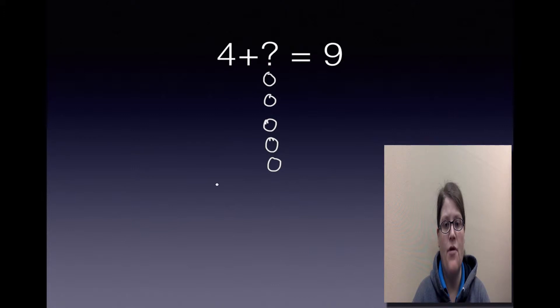We drop the 4, plus this unknown, count it up: 1, 2, 3, 4, 5. So 4 + 5 = 9. What was that missing addend? It was 5.